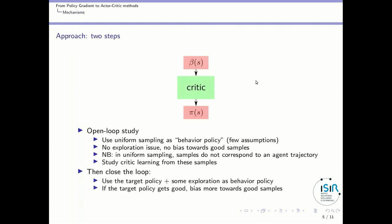To study these notions, I will use a simple paradigm with two steps. First, I will perform an open-loop study where the behavior policy will be just uniform sampling of state-action pairs in the Markov decision process. Uniform sampling is nice because it means absolutely no assumption on the way the behavior policy collects samples — no exploration issue, no bias toward good samples. Note that in uniform sampling, the samples do not correspond to an agent trajectory; we are jumping from state to state. This is only possible in simulation. We will then study how the critic learns from these samples, comparing it to an optimal critic obtainable in tabular maze problems.